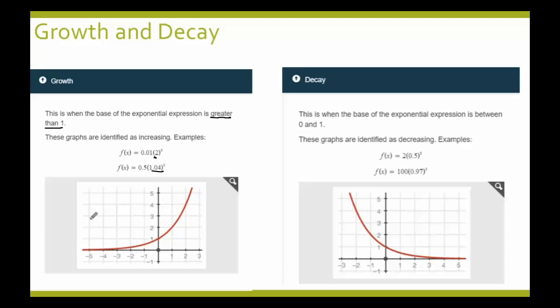As a graph, an increasing or growth function goes from left to right, increasing — so it's going upward, as indicated by this graph.